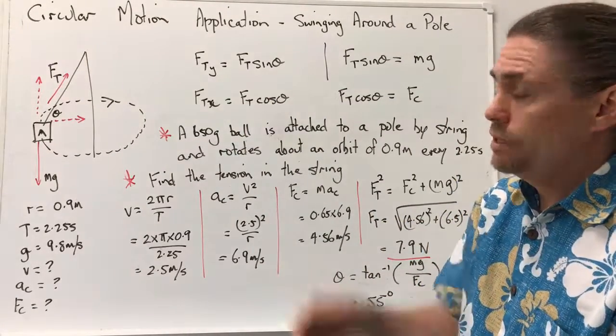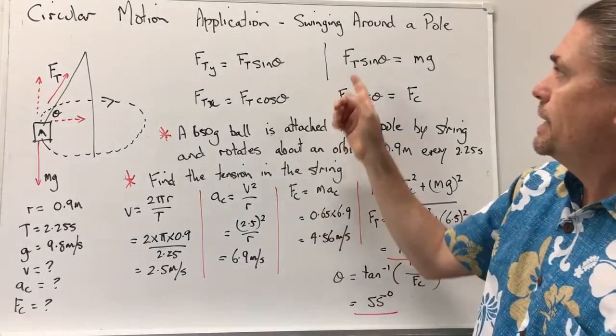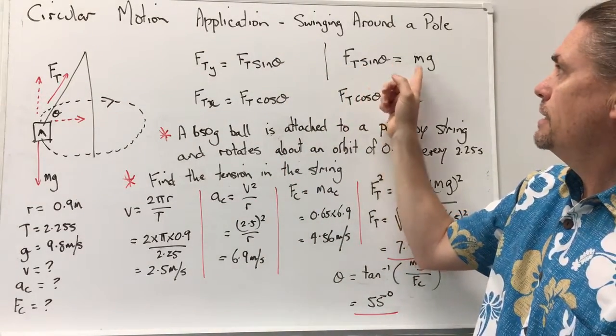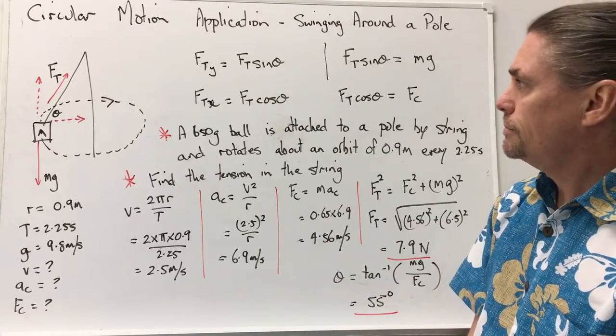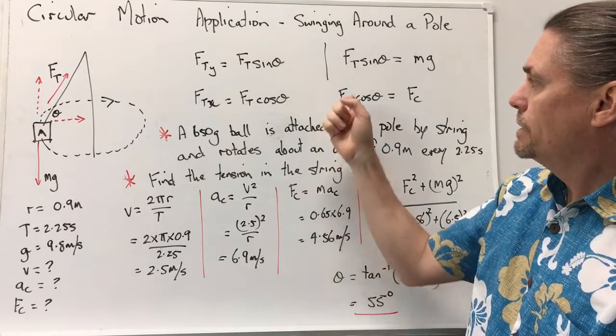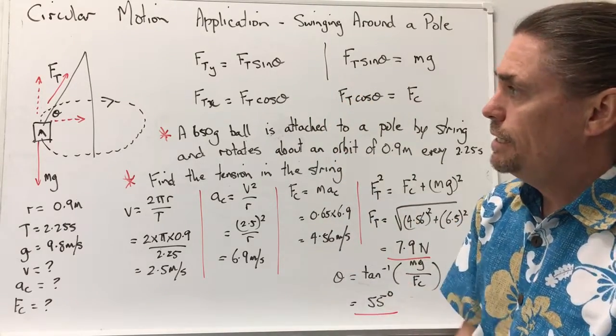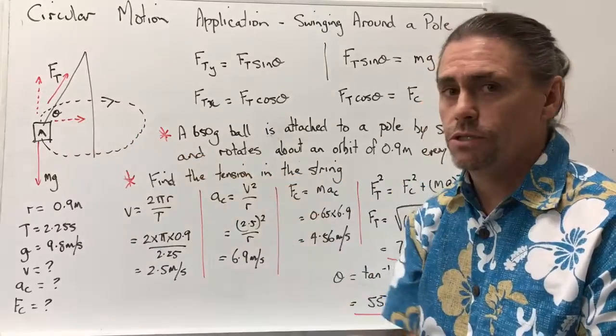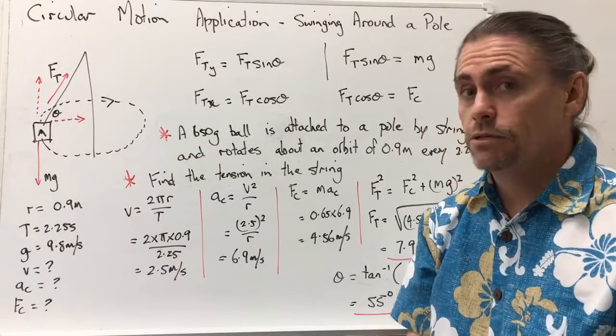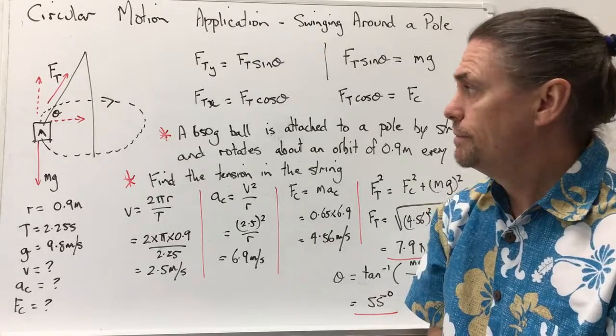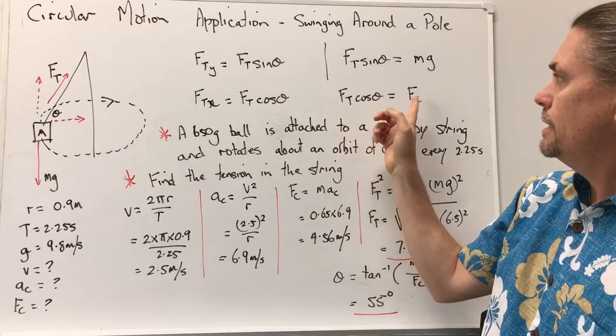So we know that in the vertical direction we're not getting any movement up or down, so we can actually say that Ft sin theta is equal to mg. And similarly, we can say that Ft cos theta is equal to the centripetal force experienced by this object because there are no other forces on the object.